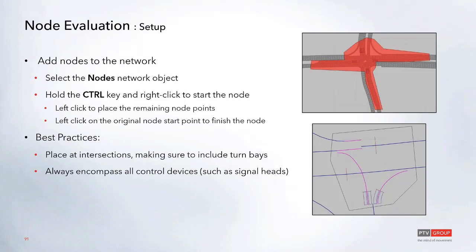Moving over to node evaluation: nodes create an area around an intersection to define what should be evaluated. First, add your nodes to the network and place them at intersections, making sure the node edge covers all of your turn lanes so they're included in the calculation. Also ensure that all signal heads and control devices are encompassed within the node, since it uses those when calculating result attributes.